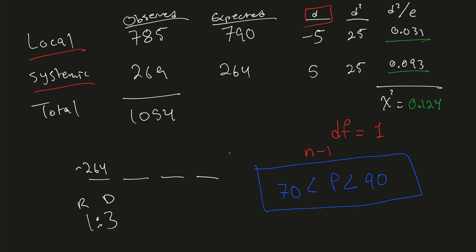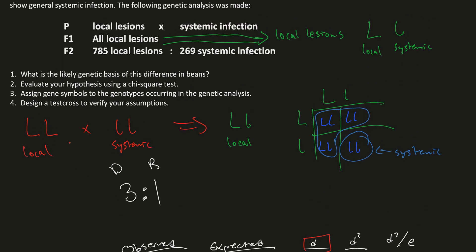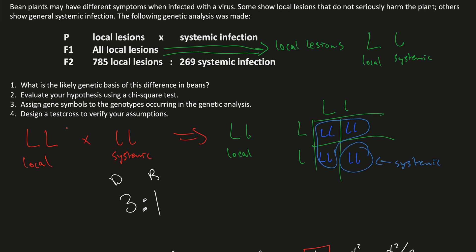This is telling us that yes, we can assume that we do have a 1 to 3 ratio. We cannot reject the null hypothesis, which assumes a 1 to 3 ratio of recessive to dominant for our genetic basis. So we're going to assume the genetic basis for our bean plants involves a dominant and recessive allele. We have two true-breeding parents, get an all-heterozygous F1 generation, and get an F2 generation of one-fourth homozygous dominant, one-fourth homozygous recessive, and one-half heterozygous.